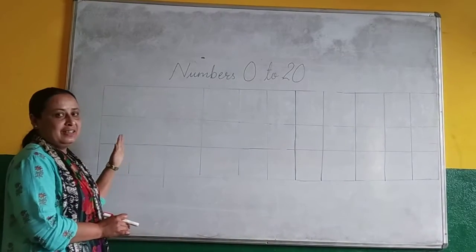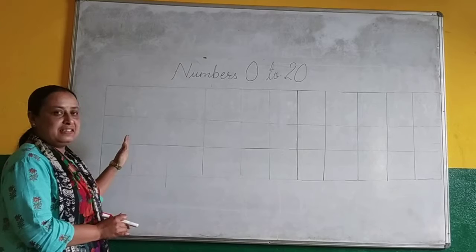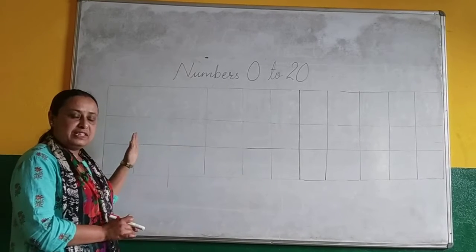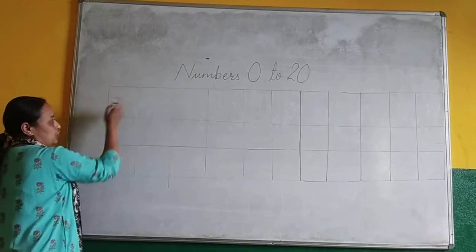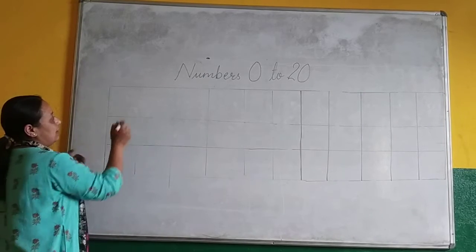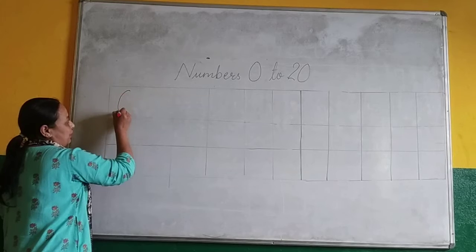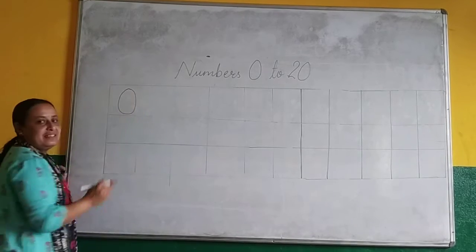Now look here all of you. I will write here. Listen. The number. I will take the number. Listen properly. Okay. Go to first box. Okay. Write 0. What is this? 0.